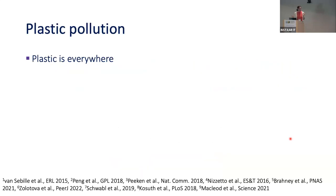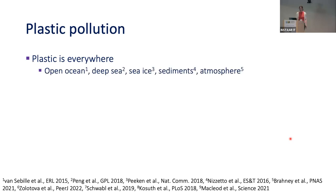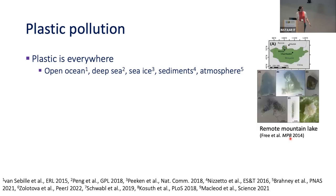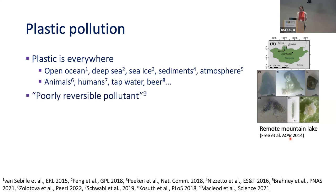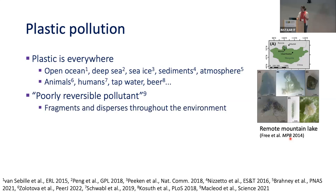We're interested in plastic pollution, and we know plastic is everywhere in the environment. It's found in the open ocean, the deep sea, sea ice, sediments, the atmosphere, remote mountain lakes in Mongolia — everywhere you look, we find plastic. It's in humans and our beer. One way to characterize this is that plastic is a poorly reversible pollutant. It breaks up into smaller and smaller pieces, disperses widely, and degrades extremely slowly, so it accumulates in the environment.